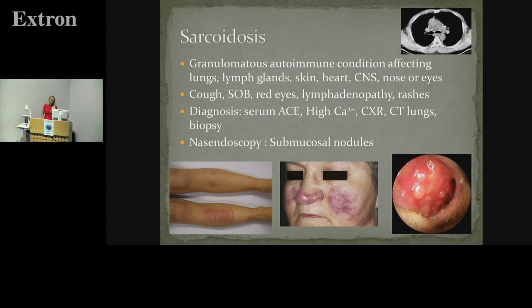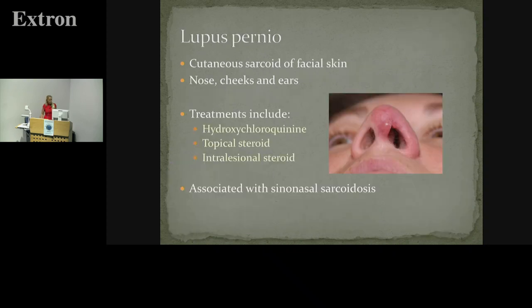Sarcoidosis is an autoimmune condition affecting predominantly lungs, lymph glands, skin, and heart. We will see less of it, but you can get this malar rash and typical nodular changes in the septum. Lupus pernio is an isolated skin form which might also present to ENT. The main role in ENT management is sometimes injecting intralesional steroids into these very localised lesions, but they will generally be managed in rheumatology or the chest clinic.